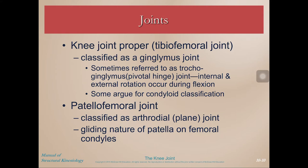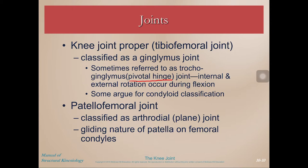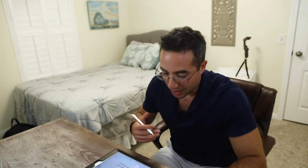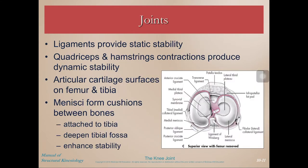As a joint, the knee is classified as a hinge joint, or ginglymus joint. It's sometimes referred to as a pivotal hinge because not only do we have hinging — flexion and extension — but there's also a little bit of external and internal rotation at the knee, which we'll see in the next video. The patellofemoral joint is classified as an arthrodial or plane joint because of the gliding nature of the patella — if you fully extend and relax your quadriceps, the patella can glide around on those femoral condyles.